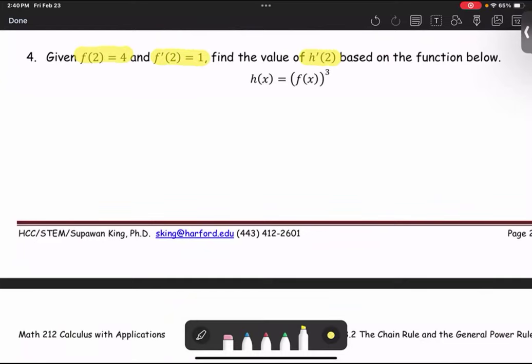The function h(x) is given as the third power of the function f. We have the power 3 of the function, so we're going to apply the general power rule. I'm going to put a note over here: general power rule, where inside here is a function g raised to the power r, r equals 3.